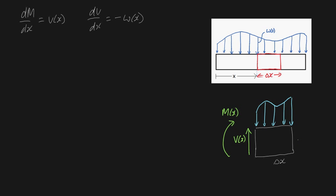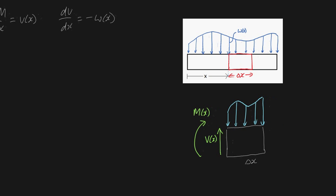Now on the right hand side we'll also have internal shear forces and bending moments, but because it's at a point x plus delta x, they'll actually look like this. This will be v of x plus delta x, and this will be m of x plus delta x.